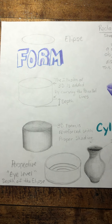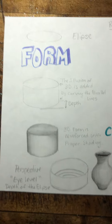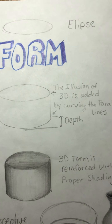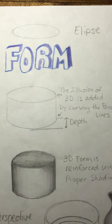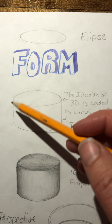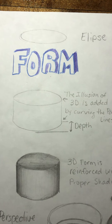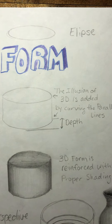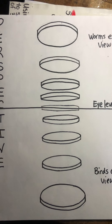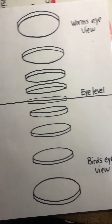Lesson two on cylinders. We've been learning about form, 3D form. We talked about the illusion of the 3D being in this curve. You need your ellipse to show the perspective that you're choosing, whether it is from the top, at eye level, or from bird's eye view.